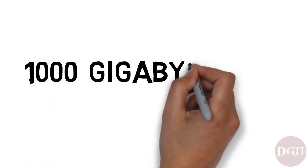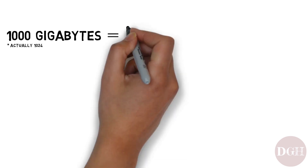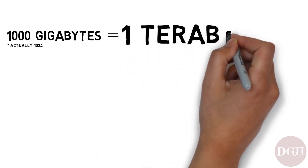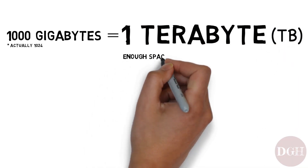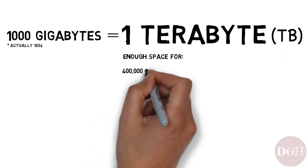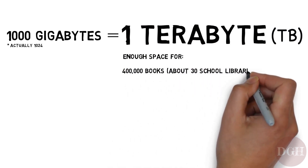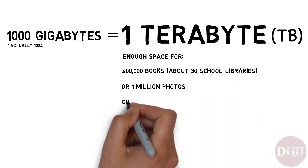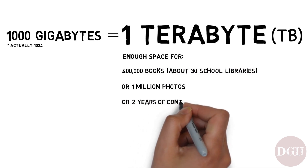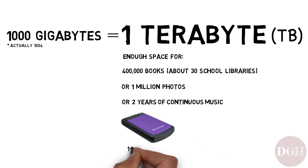So what's it called when you have 1,000 gigabytes? 1,000 gigabytes is called a terabyte, and is often abbreviated as TB. It's enough space to hold about 400,000 large books — that's 30 school libraries — a million pictures, or two years of continuous music. Today, you can buy a 1 terabyte hard drive for under $50.